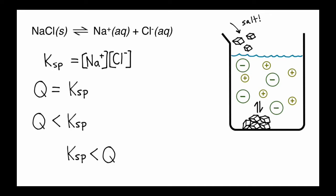Let's take a look at Q equals KSP first. If this is the case, in other words, if our current sodium and chloride concentrations multiplied together, our Q, if those are equal to our KSP, the solution will be perfectly saturated. In other words, if we add any more sodium chloride, it's not going to dissolve anymore. It's going to stay as solid.